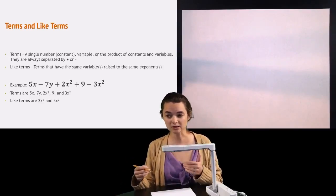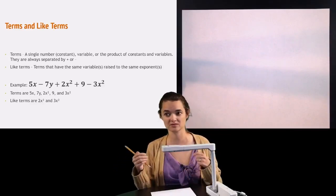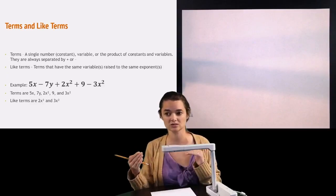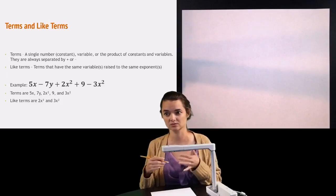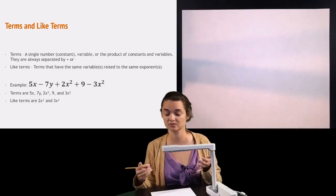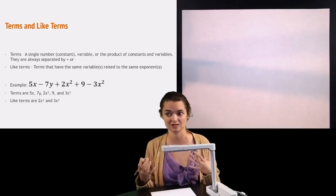The like terms are just 2x squared and 3x squared. You notice that they have the same variable, they both have x's, and they're raised to the same exponent, they have squares. You'll notice that the 5x and the 2x squared, they're not like terms because even though they have the same variable, they're not raised to the same exponent.